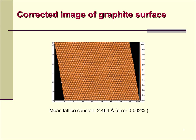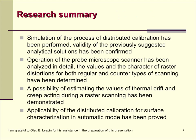On this slide, a corrected image of the graphite surface is shown. The mean lattice constant in the image corresponds to the nominal value of 2.464 angstroms. The residual relative error of the measurement makes 0.002 percent. Non-linear correction of the image has been performed by the obtained regression surfaces using the formula derived in the first paper of the series.